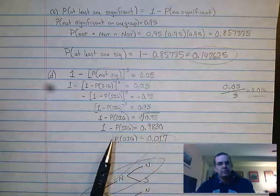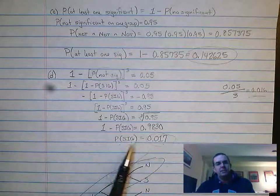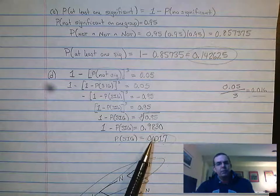What I'm going to now do is I'm going to solve for P(sig). When I solve for P(sig), it's 0.017.